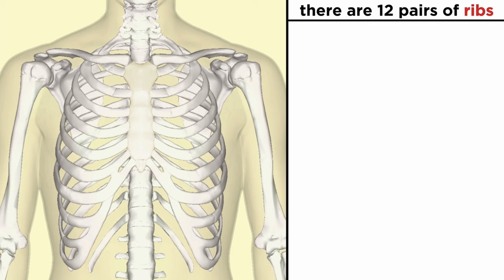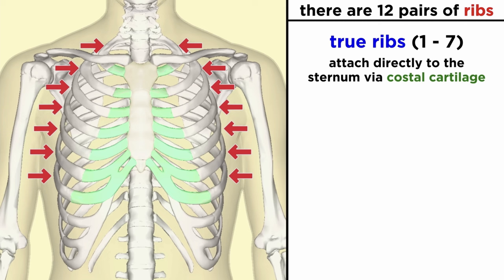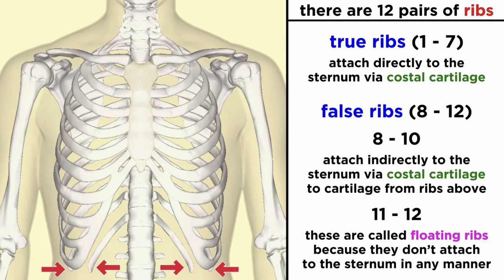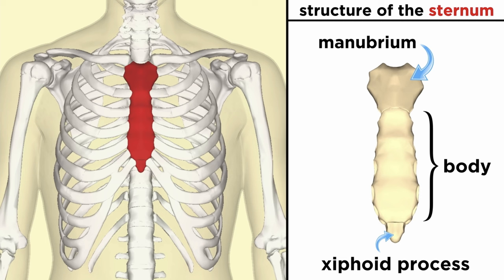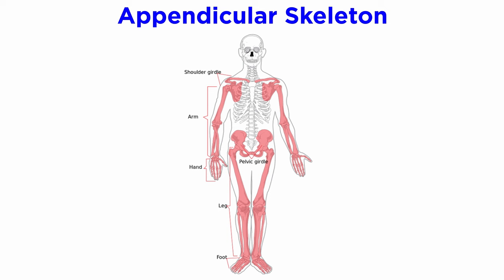Attaching to the thoracic vertebrae, humans have 12 paired ribs. True ribs connect directly to the sternum, false ribs connect via cartilage, and floating ribs do not connect at all. The sternum is composed of three smaller bones: the manubrium is most superior, then the body, and the xiphoid process is most inferior.